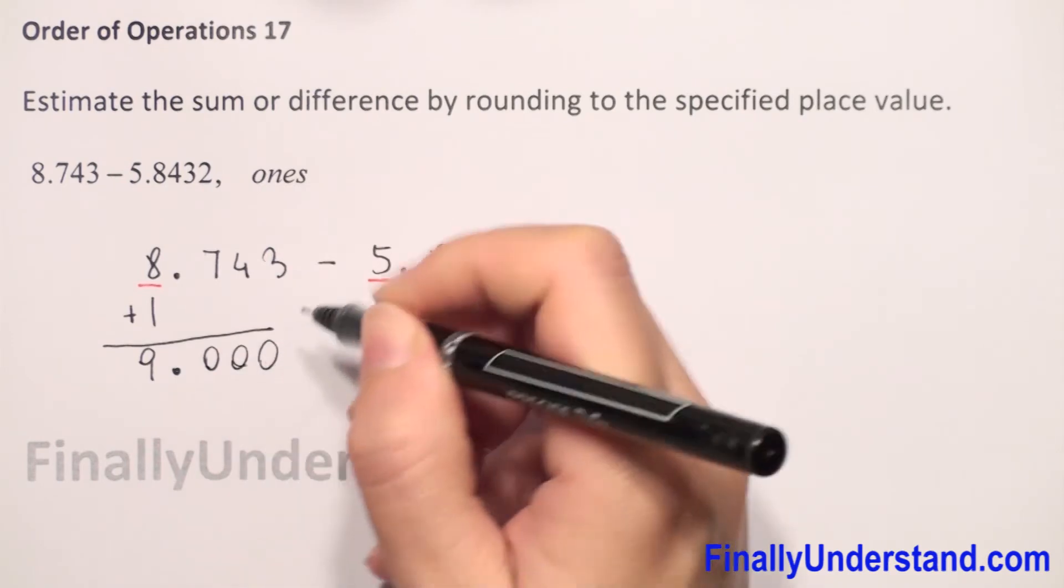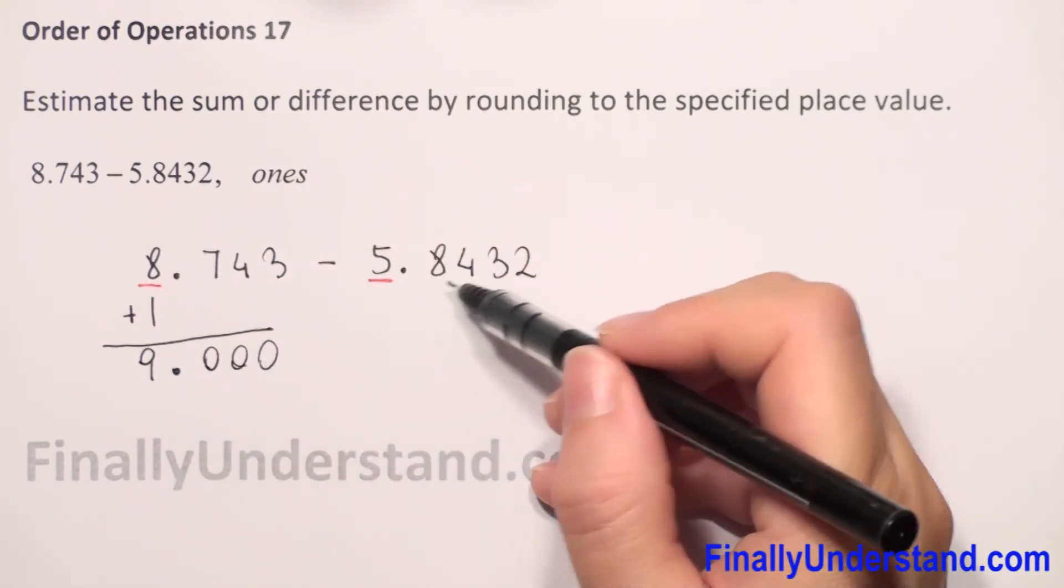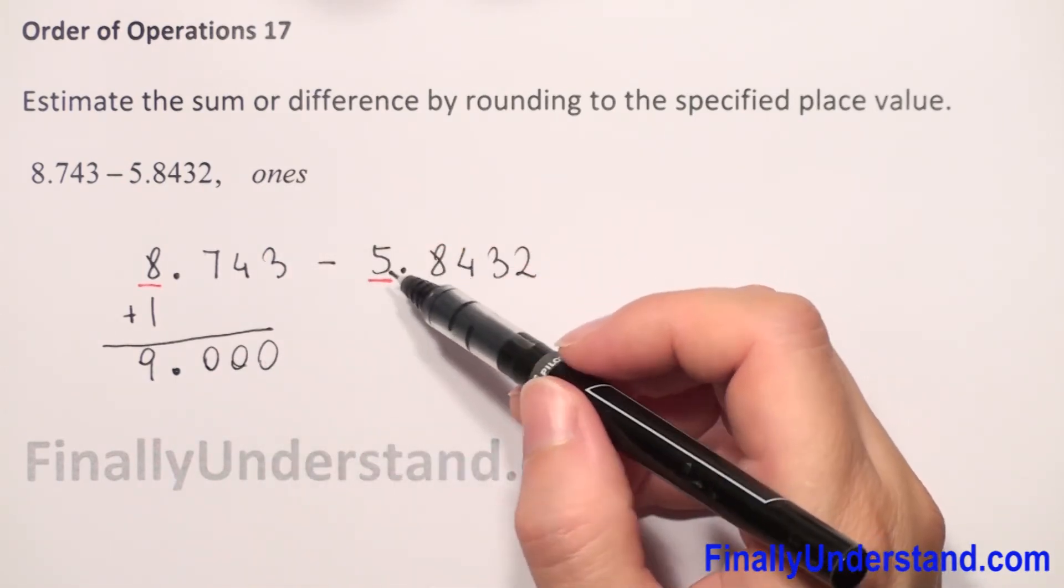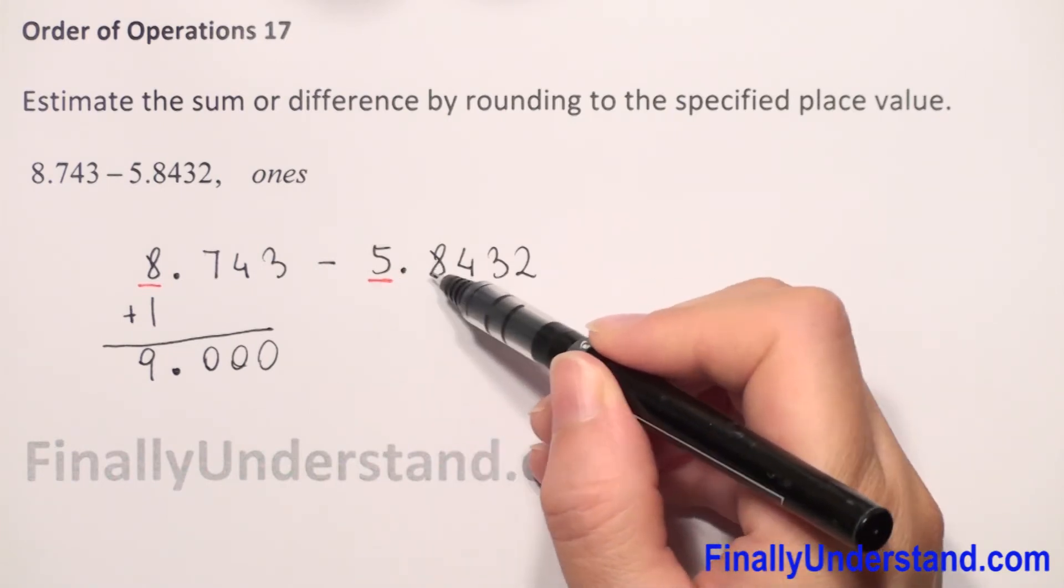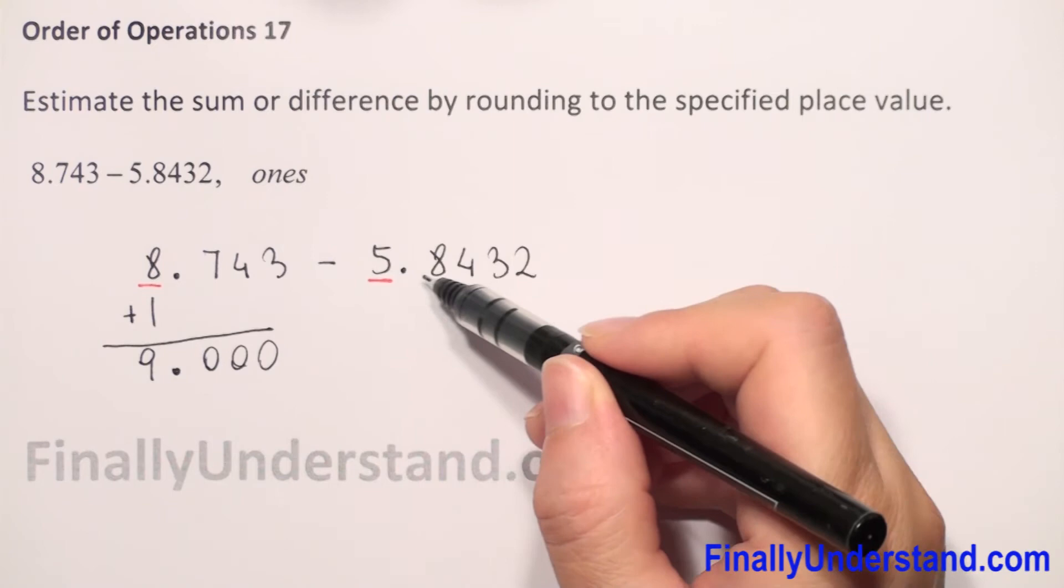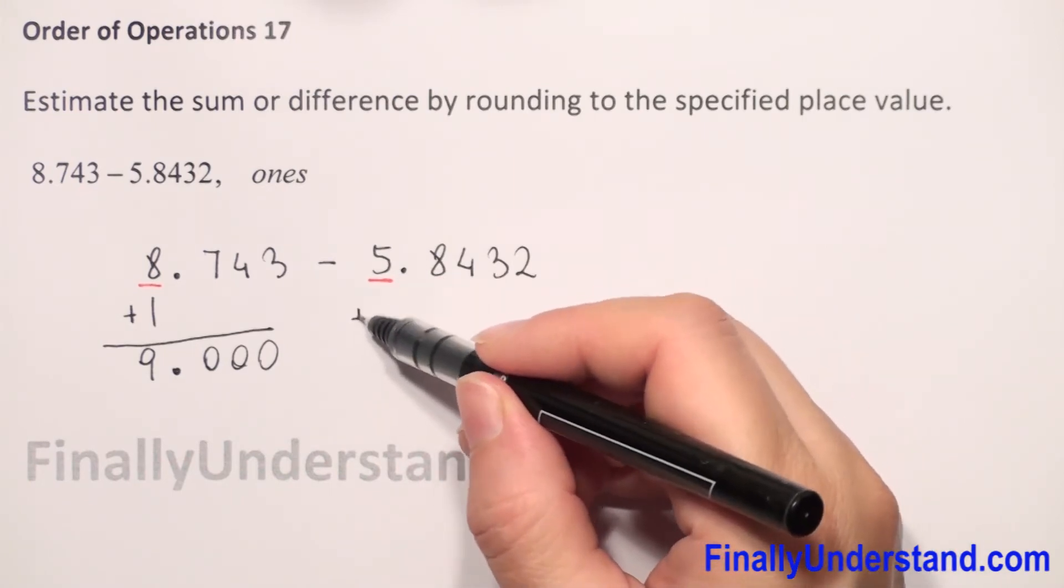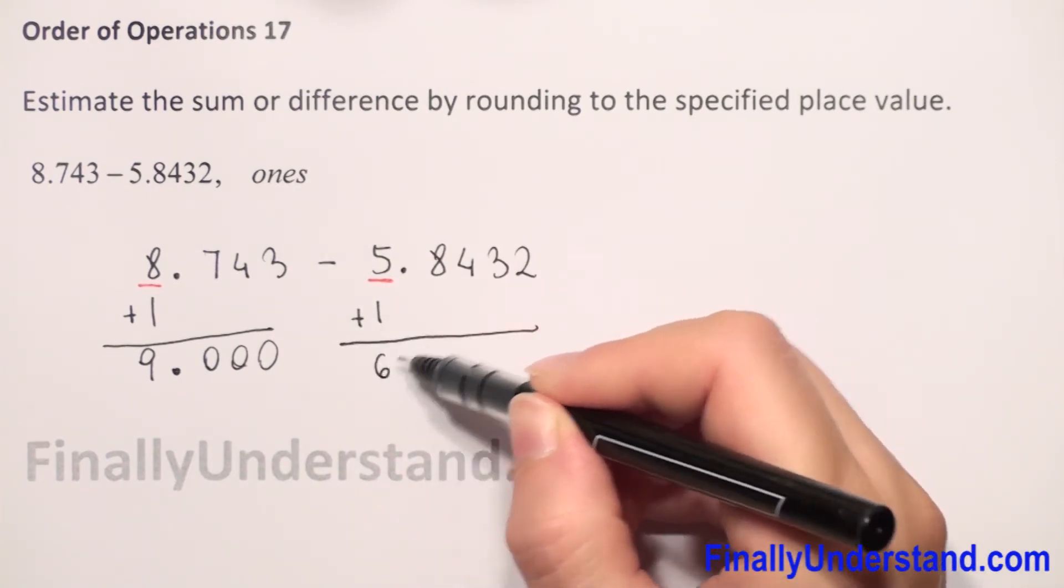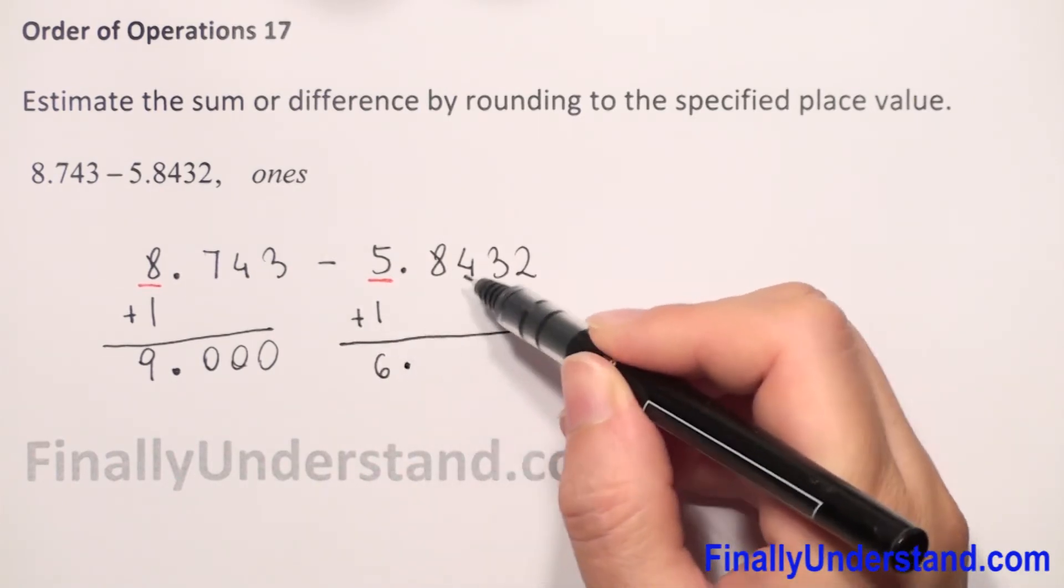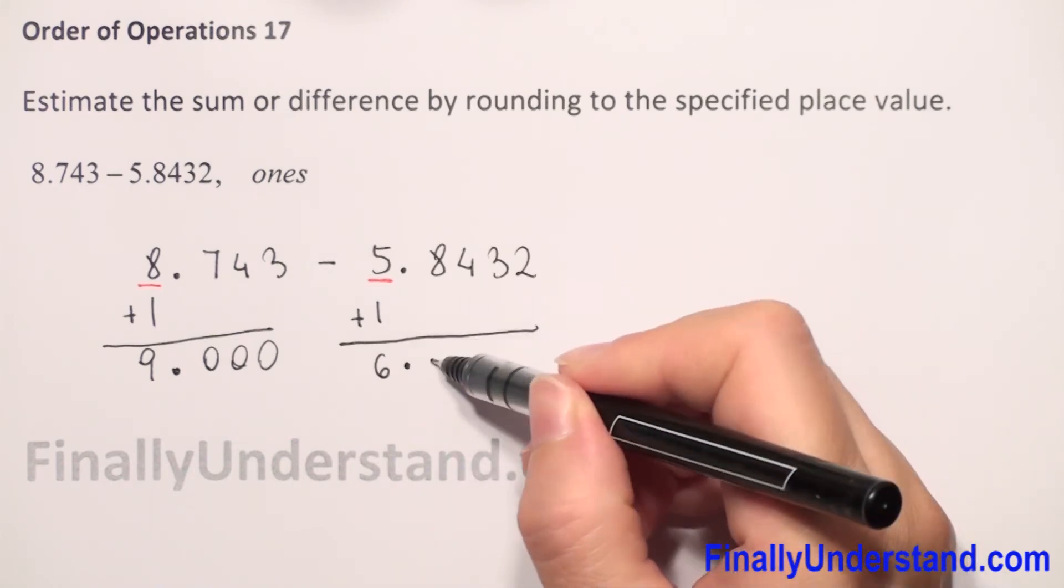For the second decimal number, we also round to ones. We check the digit after our underlined digit, which is 8, greater than 5. So we add 1 to our underlined digit: 5 plus 1 equals 6. We copy the decimal point and change every digit after to zeros.